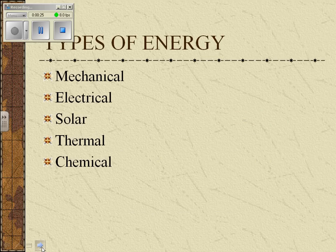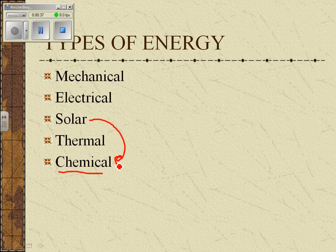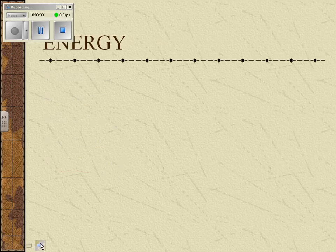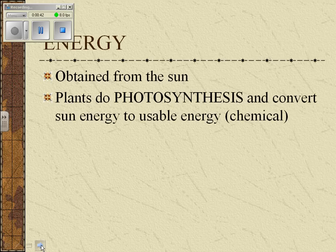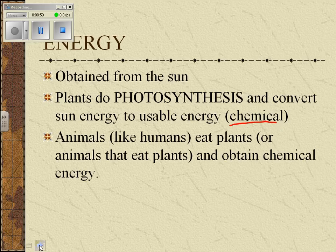Here are the types of energy as we've discussed before. We're specifically going to talk about chemical energy. Later on when we talk about photosynthesis, we'll talk about the conversion of light to chemical energy. Energy is obtained from the sun, plants do photosynthesis and convert sun energy to usable chemical energy. It's chemical energy that we're going to spend time talking about.